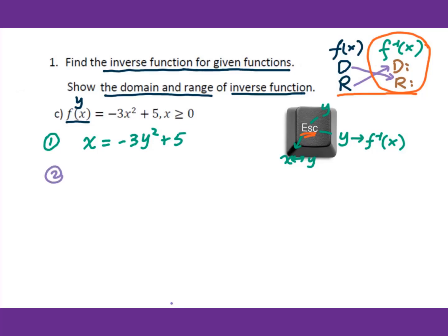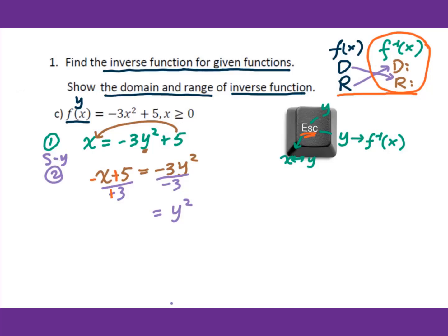The second step is to solve for y. This is a power pattern equation, so we isolate the variable on one side. We subtract 5 from both sides: x minus 5 equals negative 3y squared. Then we divide by negative 3. Remember the negative sign cannot be in the denominator, so we change the sign for every term, getting negative x plus 5 over 3.